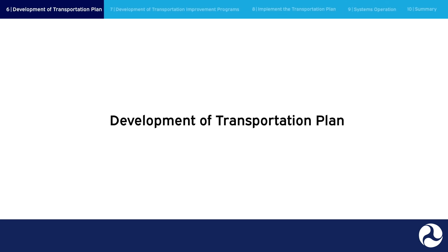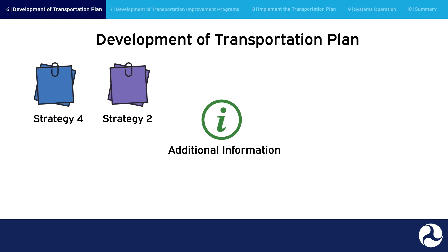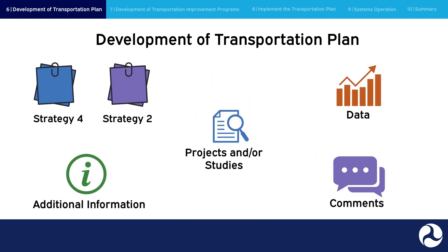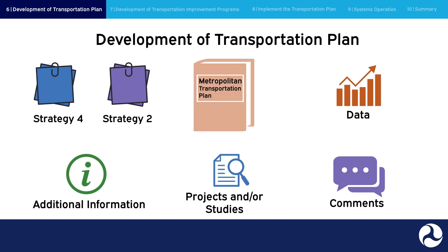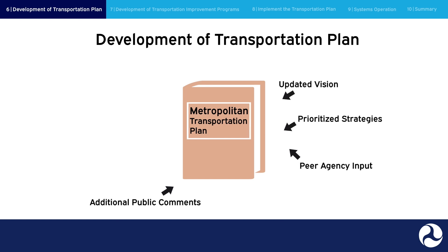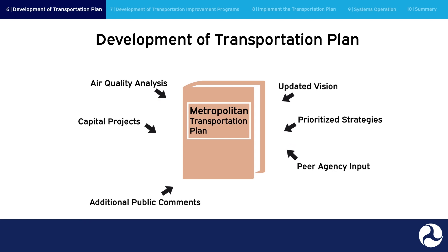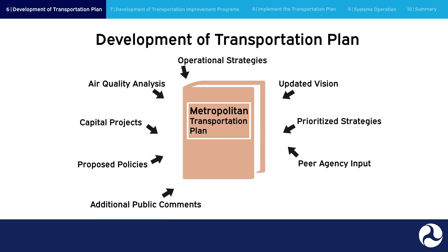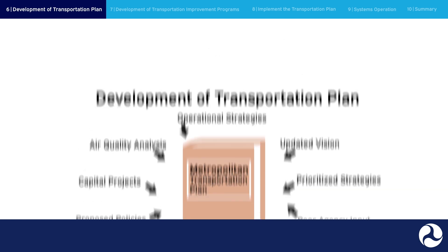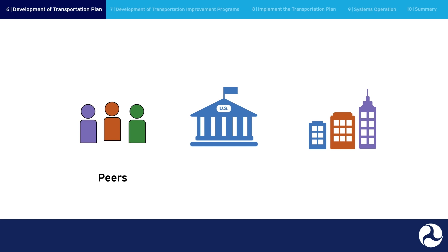Development of Transportation Plan. Once strategies are evaluated and prioritized, they are combined with additional information, data, comments, projects, and/or studies into the Metropolitan Transportation Plan. This plan may incorporate additional public comments, peer agency input, prioritized strategies, an updated vision, and air quality analysis. The plan will include detailed information on capital projects, proposed policies, operational strategies, and funding mechanisms. This process has many steps itself. Along the way, there are regular check-ins with peers, other agencies, and the public to receive feedback and guidance on plan development.